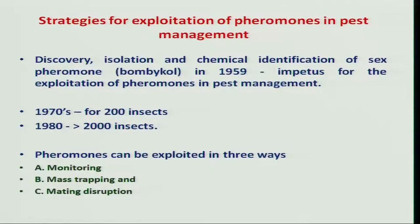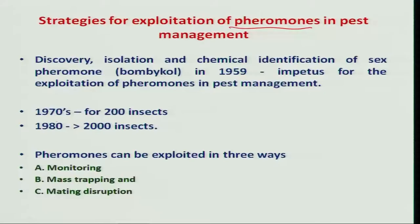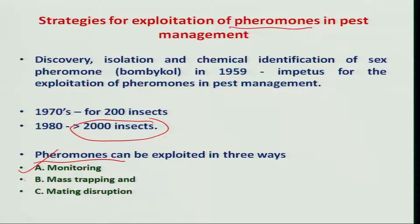Till now we have studied some of the pheromones useful in pest management programs, but much of the study was done on sex pheromones which are much used in pest management programs. How best can one exploit these pheromones in pest management programs? We now have more than 2000 pheromones which are identified and isolated, but only in a few insects have these been applied for pest management programs. These pheromones are exploited in three ways: one for monitoring, for mass trapping, and also for mating disruption technique.